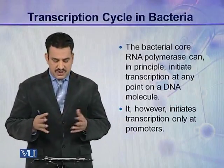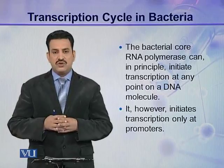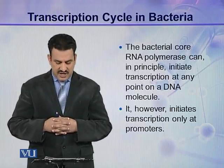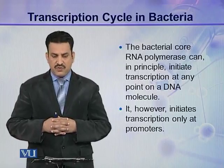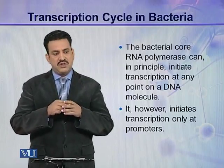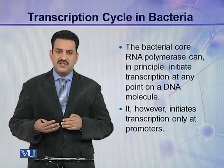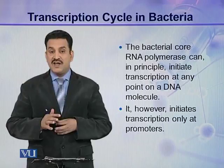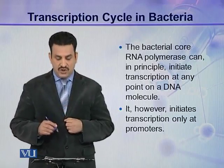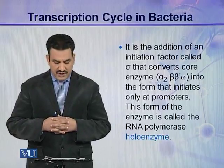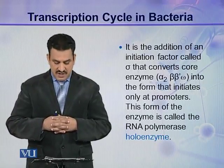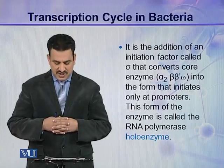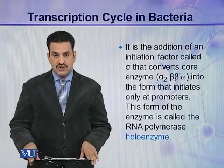Let us see a transcription cycle in bacteria. Transcription is carried out by RNA polymerase. The bacterial core RNA polymerase can in principle initiate transcription at any point on the DNA molecule, however it initiates transcription only at promoters. It is the addition of an initiation factor called sigma that converts the core enzyme — which consists of two alpha subunits, beta, beta prime, and omega — into the form that initiates only at promoters.